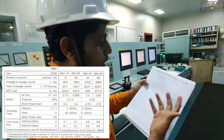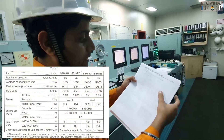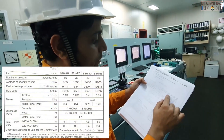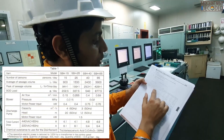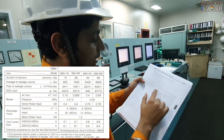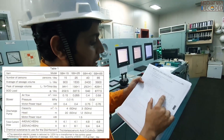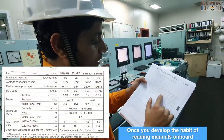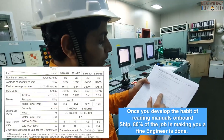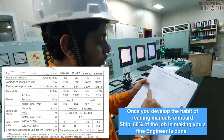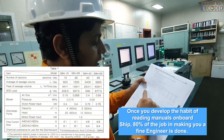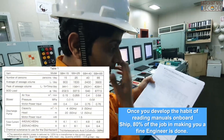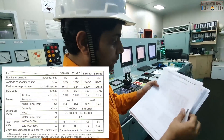Which model is ours? It is SPS 25. The number of persons may be 25. Average sewage volume and peak volume are indicated. BOD load is 337.5 grams per day. Blower pressure, discharge, total drawn current — everything is mentioned over here.